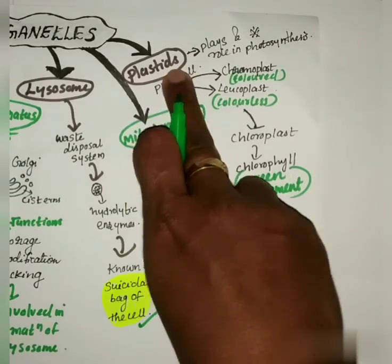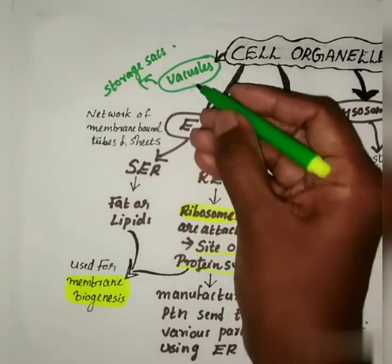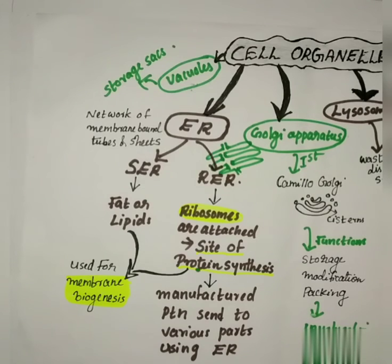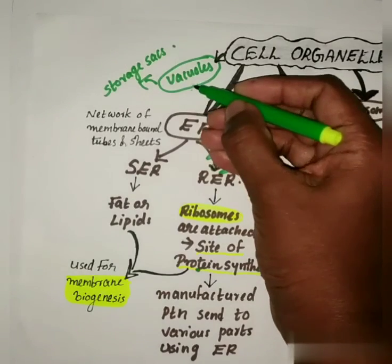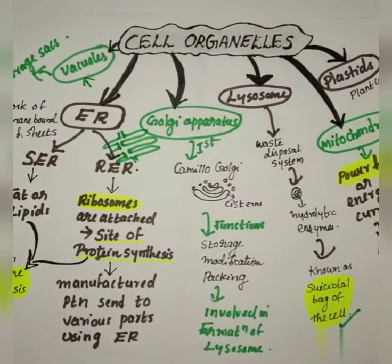Mitochondria and plastids have their own genetic material. The two cell organelles which have their own genetic material are plastids and mitochondria. Vacuoles are known as storage sacs which store solid or liquid content — they are small in animals but large in plant cells. In plants, plastids are present but absent in animals; animals have small vacuoles but plants have larger ones. In plant cells, the nucleus is present to the side, but in animal cells the nucleus is present in the middle or center. These are the cell organelles in a glance. I hope you all understood. Thank you for watching.